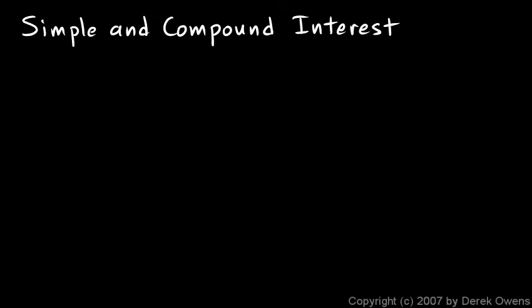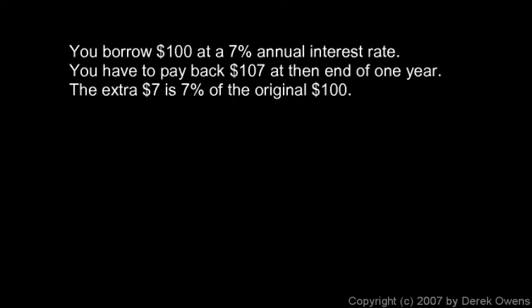People can borrow money and pay it back later, but when you do that you have to pay back more than you borrowed. That extra amount is one of the ways that banks make their profits. Whenever someone borrows money — whenever they make a loan — it's done at a certain interest rate, and that interest rate is usually expressed as a percentage.